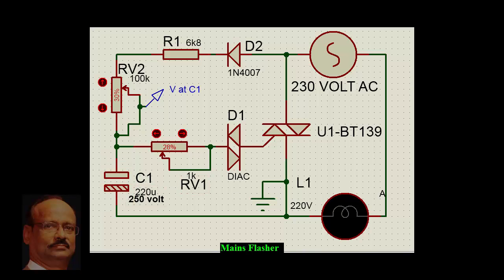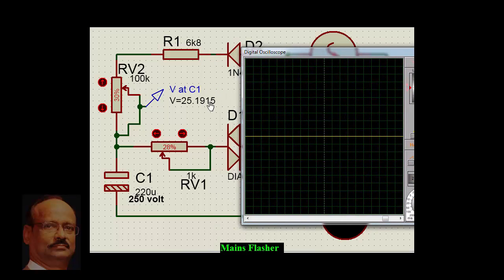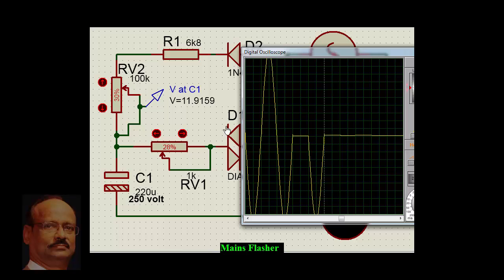Let's see the operation. When we switch on, we notice that the capacitor voltage is increasing. As you can see, at around 33 volts, this output comes and then goes away.